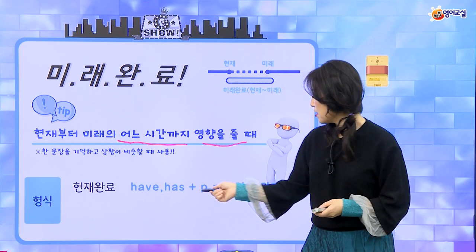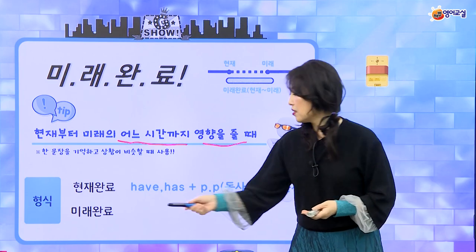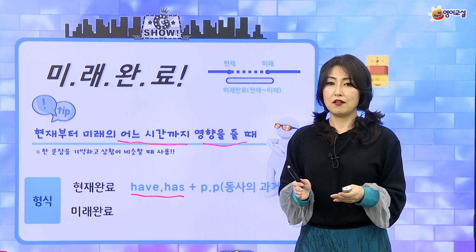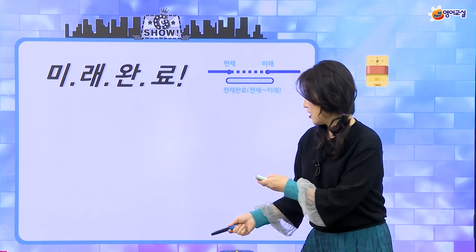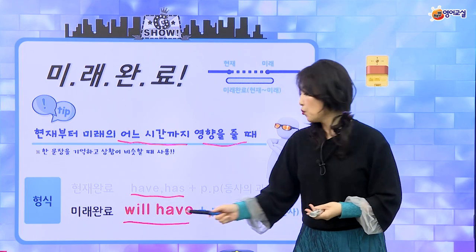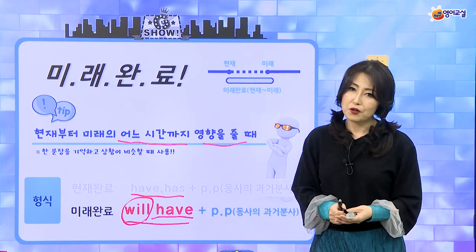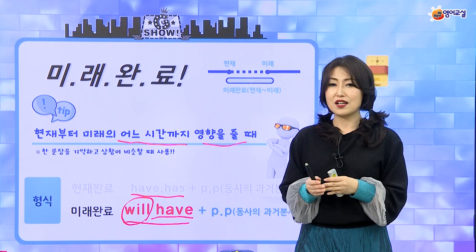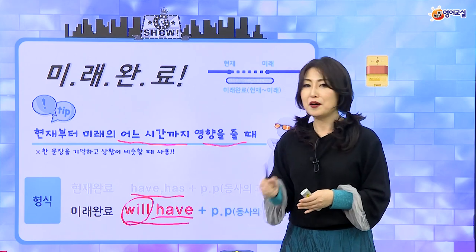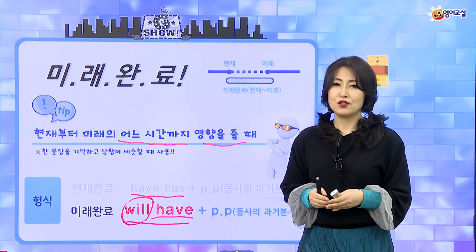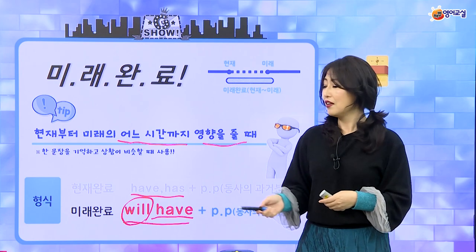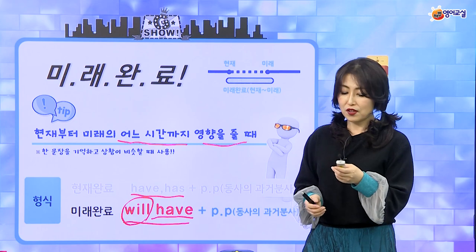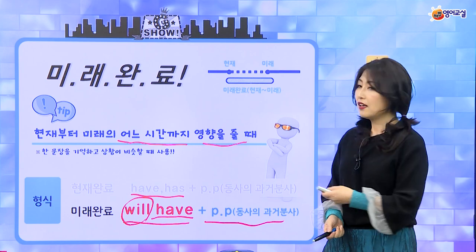형식은 현재 완료가 have/has + PP예요. 과거 완료는 have랑 has를 had로 바꿨어요. 그럼 미래 완료는 have를 미래로 바꾸면 되죠 — will have가 돼요. 주어가 3인칭이든 1인칭이든 복수든 단수든 다 과거 완료는 had로 시작하고, 미래 완료는 will have로 쓰면 돼요. 공식처럼 그냥 외우면 되겠어요. PP — 동사의 과거 분사가 오는 형태는 항상 같아요.